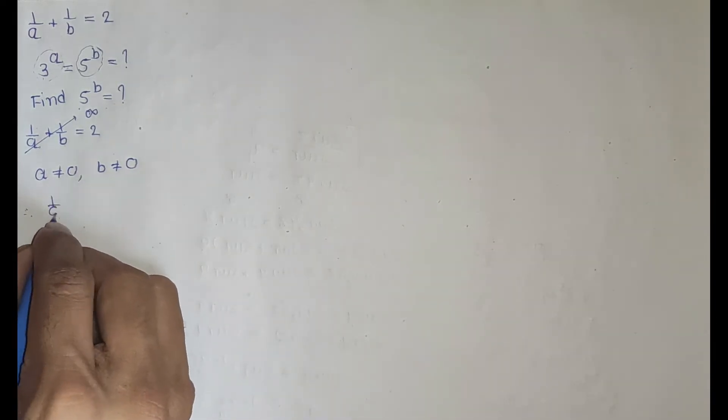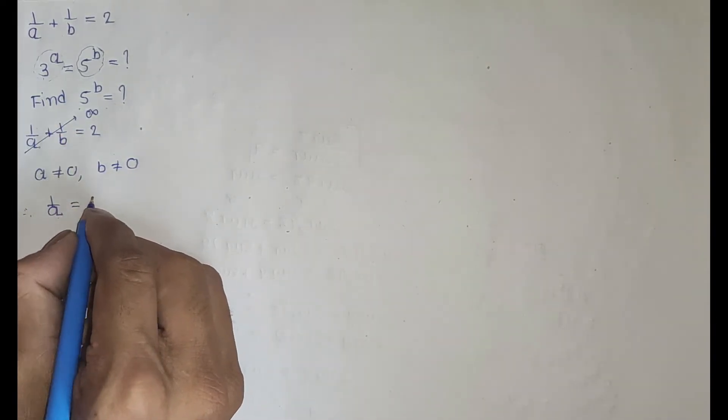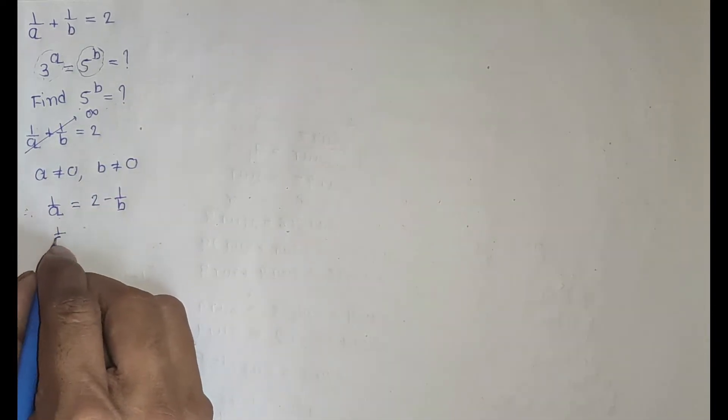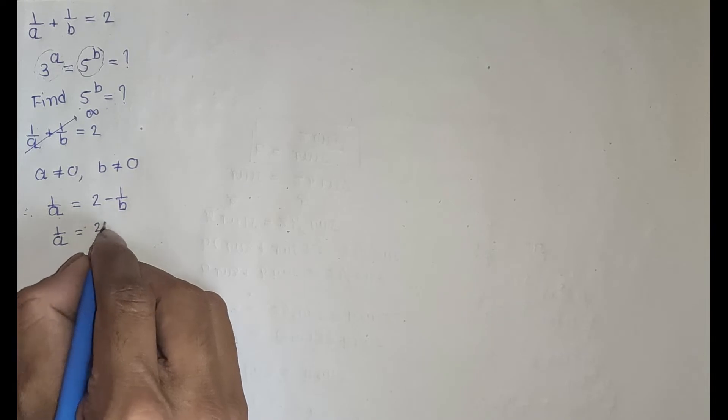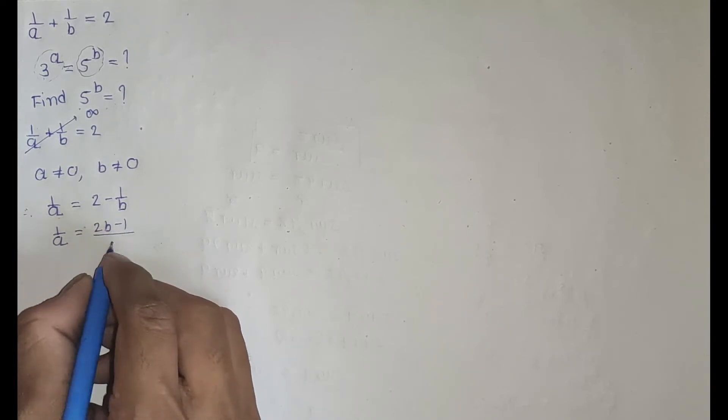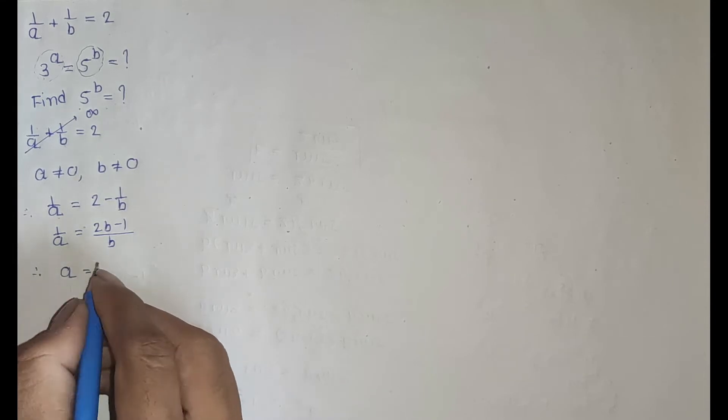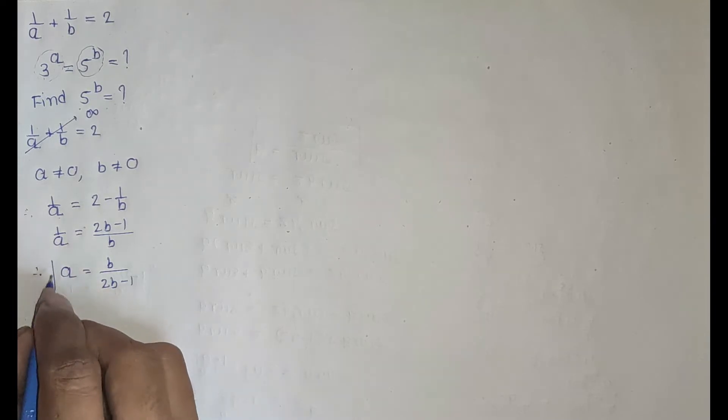Here 1 upon a equal to 2 minus 1 upon b. Now 1 upon a equal to 2b minus 1 divided by b. Therefore a equal to b divided by 2b minus 1.